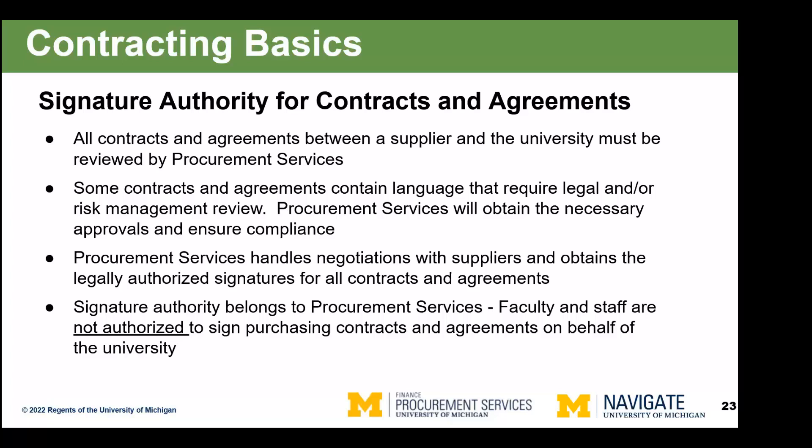Procurement will handle the negotiation with suppliers and obtain all the signatures. Typically, we will review the contract documents, negotiate back and forth with the supplier, and when we think we've got something we can live with, if we have any concerns, we will send those to the department as what we call a 'department business decision' — calling out specific sections of a contract that you need to know about or make a decision on whether to accept. You can accept it, reject it, or ask us to go back and negotiate further. The signature authority belongs to procurement services as passed down by the regents. Faculty and staff are not authorized to sign contracts and agreements on behalf of the university.